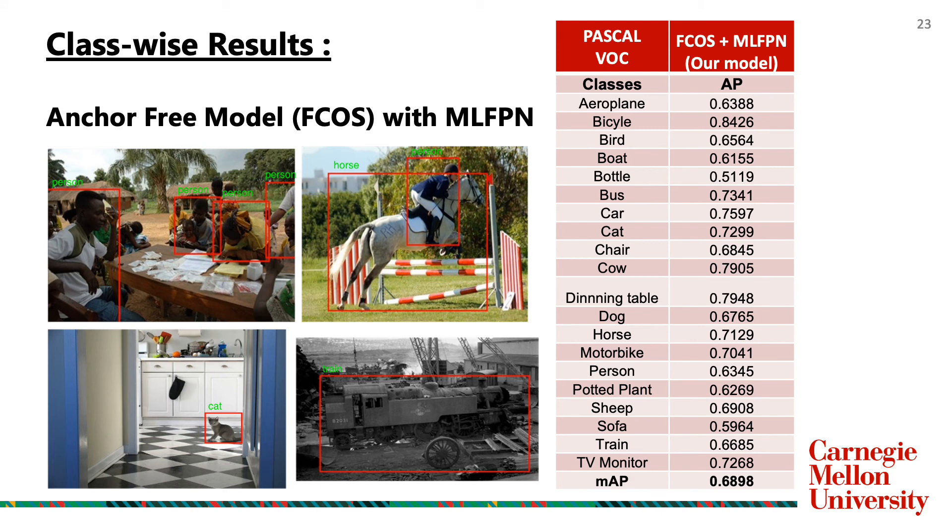Lastly, we test the MLFPN with the anchor-free FCOS model and we achieve an MAP of 0.6898.